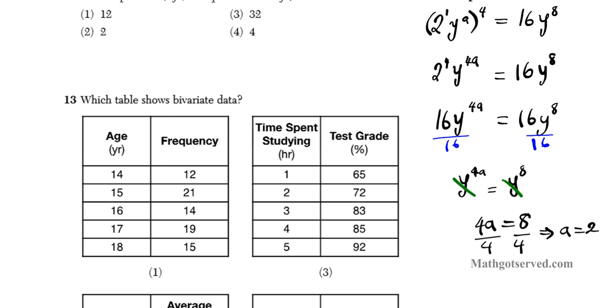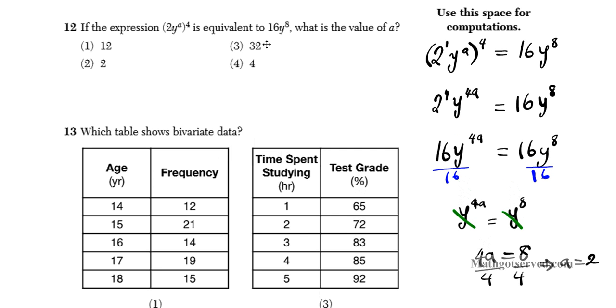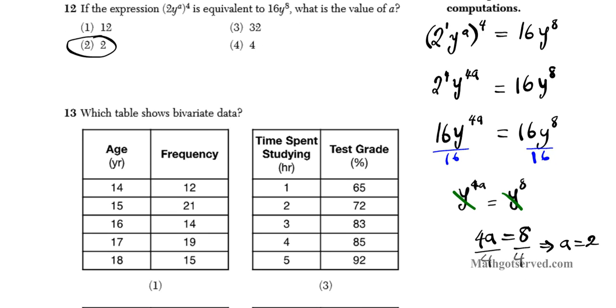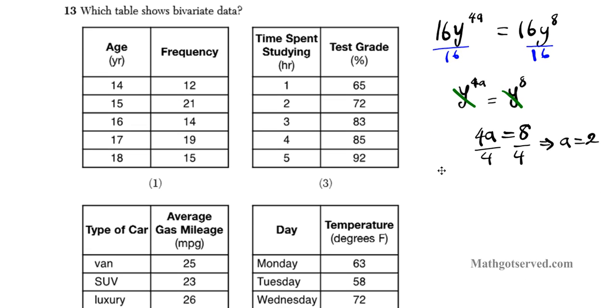A equals 2. So that's what satisfies A in order to get 16 once to the 4th after expanding this. So our answer is option number 2. Let's shift our attention to number 13. Number 13 says, which table shows bivariate data?